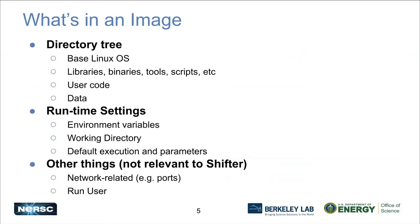What exactly is in an image? You can think of it as a snapshot of your host file system if you were using Linux. It includes the base OS — the Linux operating system — all the libraries included with the distribution, other libraries you've installed, other tools, the user code itself, and it can include data with some limitations. It can also include runtime settings like environment variables, working directories, and how you want to execute the application.